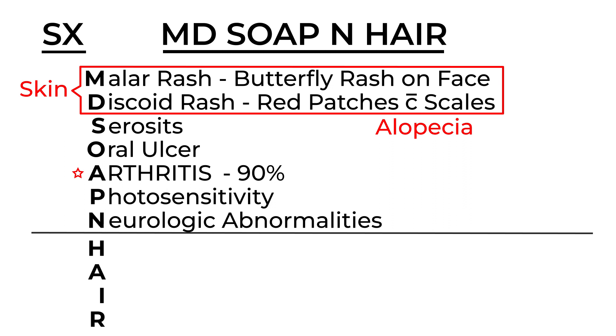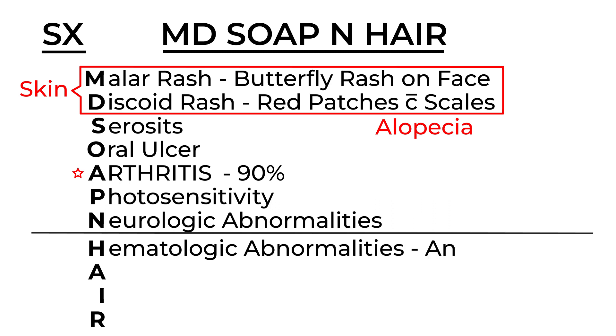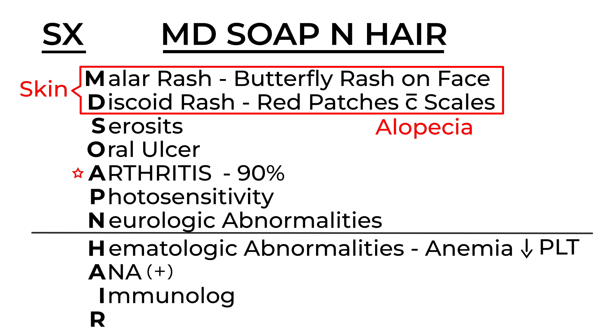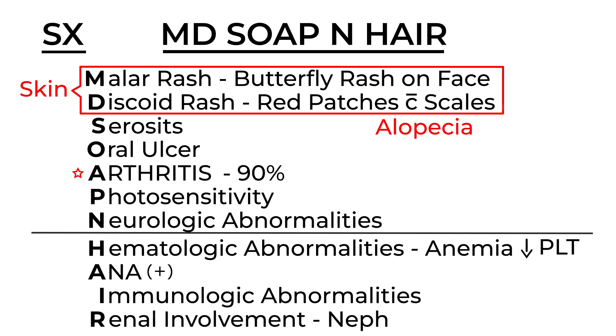The next letters in the mnemonic refer to lab values. The H refers to hematologic abnormalities, such as anemia and low platelet count, measurable with a CBC. The A is for ANA — anti-nuclear antibody — which will be positive in lupus patients. The I is for immunologic abnormality, since lupus is an autoimmune disorder. Finally, the R is for renal involvement, as some lupus cases can involve nephritis.